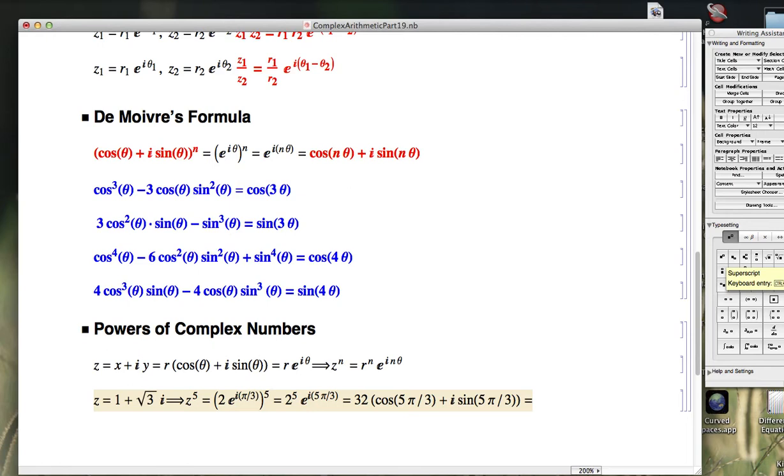The cosine is going to be positive, positive 1 half. So 32 times 1 half is going to be 16. And the sine of 5 pi over 3 is going to be negative, negative square root of 3 over 2. Multiply that by 32, I'll get negative 16 square root of 3 times i. So this should be the answer.